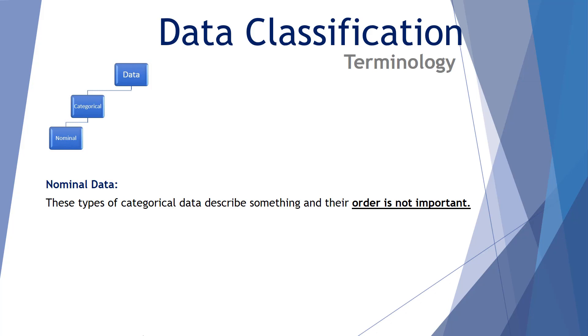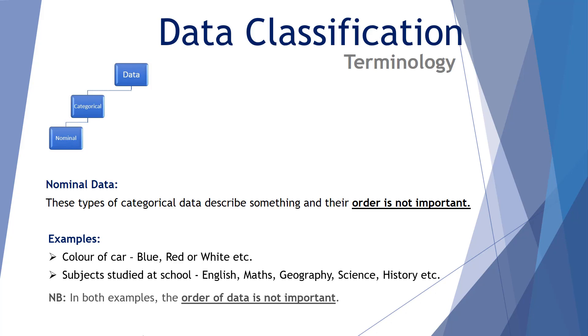Now under categorical data we can further subdivide into two additional categories. The first subcategory is nominal data. These types of categorical data describe something and the order is not important. For example, the color of a car, you could classify as blue, red, white, green, whatever. The order isn't important. A blue car is not any better than a white car. Or subjects studied at school: English, maths, geography, science, history, etc. Once again, there's no real order of hierarchy in terms of which subject is more important than the other. So these represent categorical nominal data. In both examples the order of the data is not important.